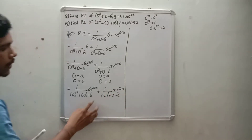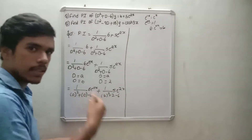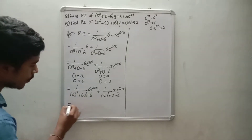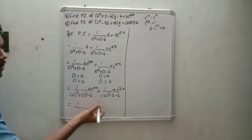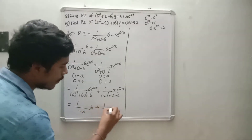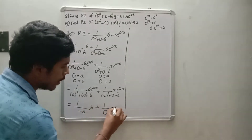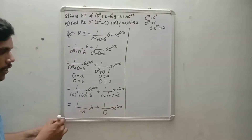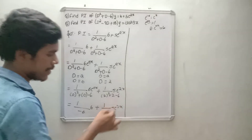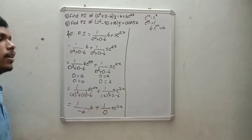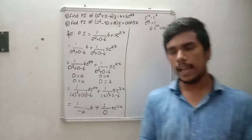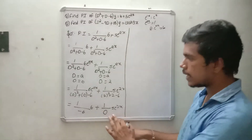e to the power 0x equals 1. So the first part gives 1 divided by (0 plus 0 minus 6) into 6, which equals minus 1. For the second term: 2 squared is 4, plus 2 minus 6 equals 0. So the denominator is 0 — this is the 0 equals 0 case discussed in the last video.